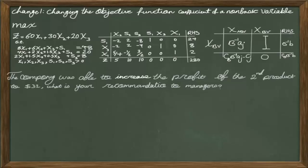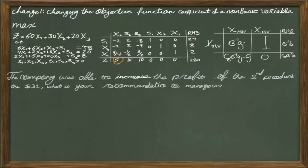Let's answer this question using the formulas introduced in the first part of the sensitivity analysis lesson. If you change the coefficient of a non-basic variable such as X2, the only formula where you see the impact is in the row of Z. You have to recalculate the coefficient of the non-basic variable in the row of Z and see whether it's positive or negative. If it's positive or zero, we remain in the same optimal table. If it becomes negative, we have to continue the table and come up with a better solution, meaning we have not reached the optimal solution and can improve it.